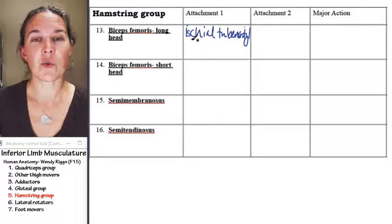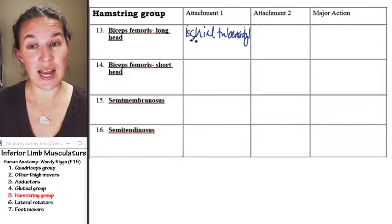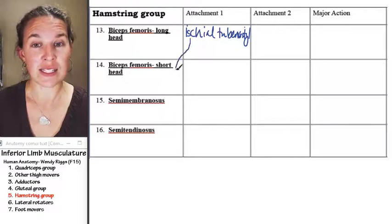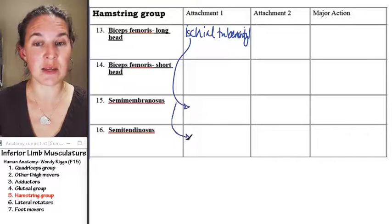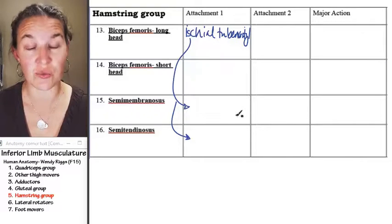So now I said that almost all of this group attaches to the ischial tuberosity, and in fact, all except the short head of biceps. So semimembranosus and semitendinosus both also attach to the ischial tuberosity.